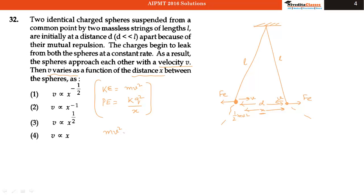that will be mv squared plus kQ squared by X, and it will be a constant value.